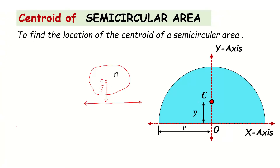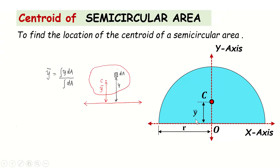We take an infinitesimally small area dA in the plane figure, and its distance from the axis we call y. Then y-bar is mathematically the integration of y·dA divided by the integration of dA. This dA is an infinitesimally small area. We multiply dA by y and integrate it, then divide by the integration of dA. This is the procedure we follow for finding the y-coordinate.